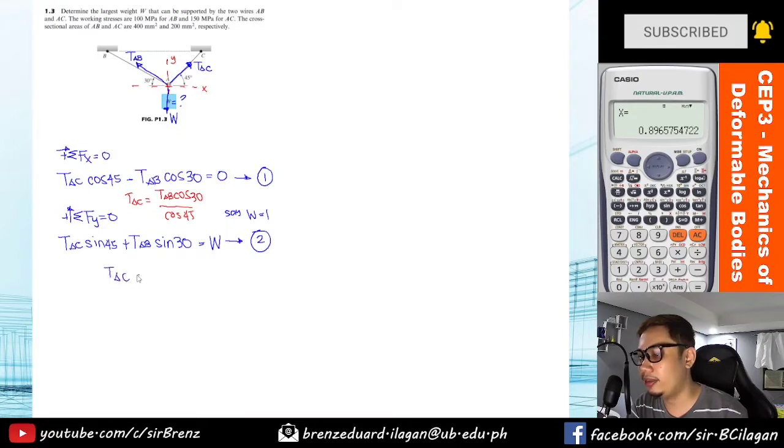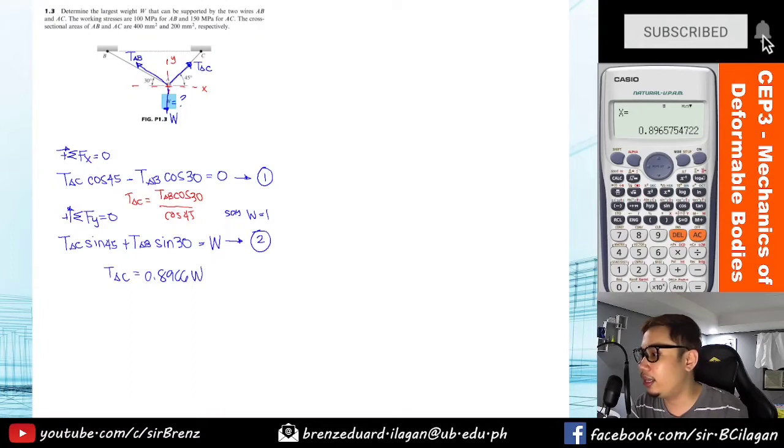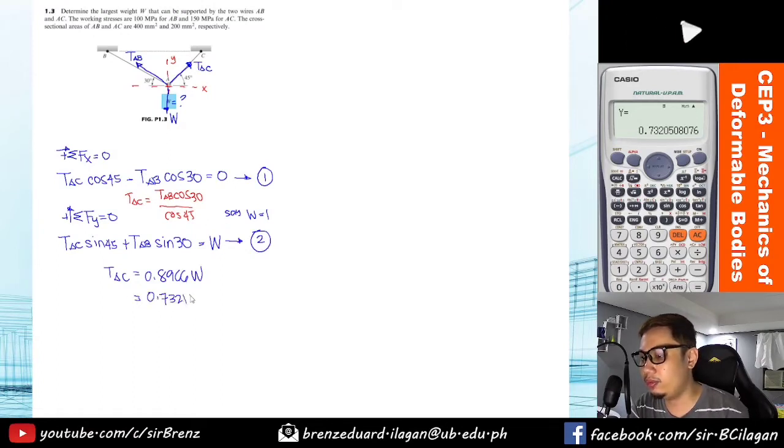Okay, so the value for AC, it equals 0.8966, so 0.8966 W. And then for AB, that is 0.7321, so 0.7321 W.